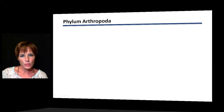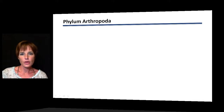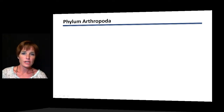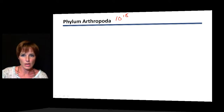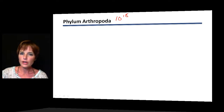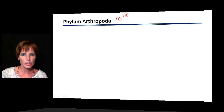The second phylum in this molting clade is Arthropoda — the arthropods. This group gets a lot of attention because it is the largest of all invertebrate phyla. It's estimated there are 10 to the 18th arthropod organisms on Earth. Most of these are insects.